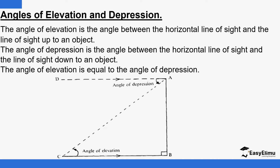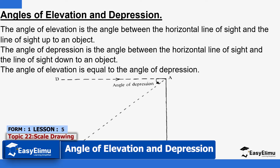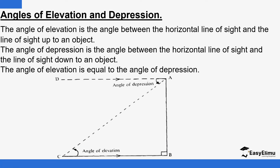When we talk about Angle of Elevation, it simply means the angle between the horizontal line — see this horizontal line here, the horizontal line of sight — and the line of sight up to an object. So the line of sight is this one here.